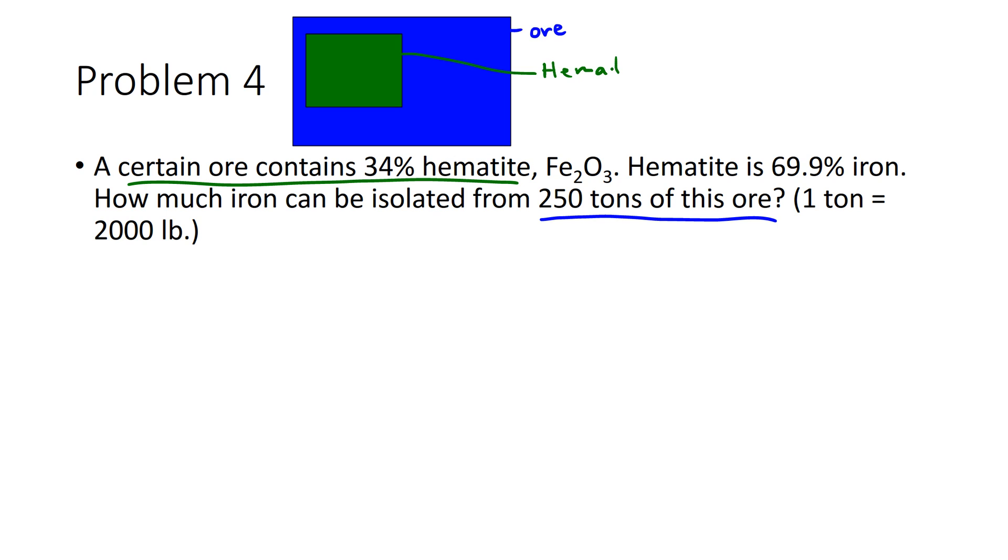And finally, we know that hematite is 69.9% iron, so inside of the green box what we can do is draw another red box.